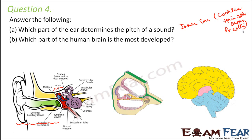Question: which part of the human brain is the most developed? Humans have the best ability to think, and thinking is concentrated in the cerebrum. So cerebrum is the most developed part of the human brain.